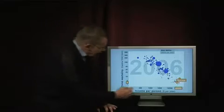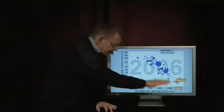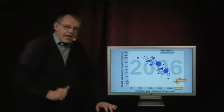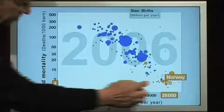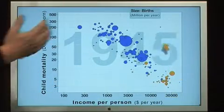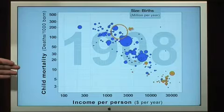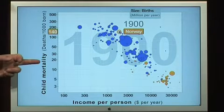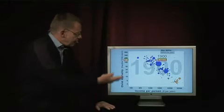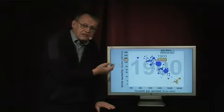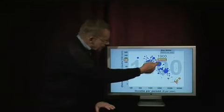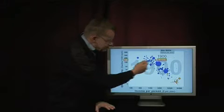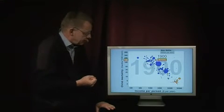Norway is a very successful country with very high income and very low child mortality. I will now take Norway backwards in history. Norway flies backwards and lands in the year 1900, when it had high child mortality: 140 children dying per every 1,000 born — up among the countries with the highest child mortality today.